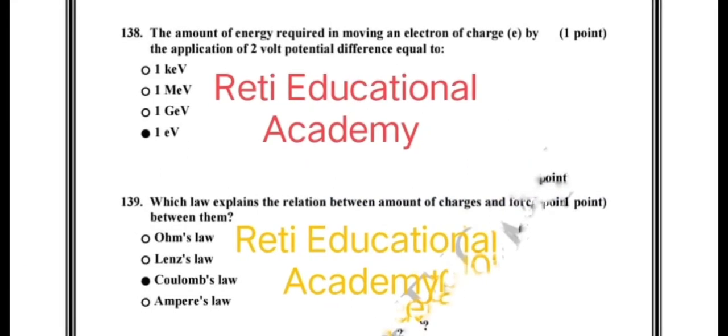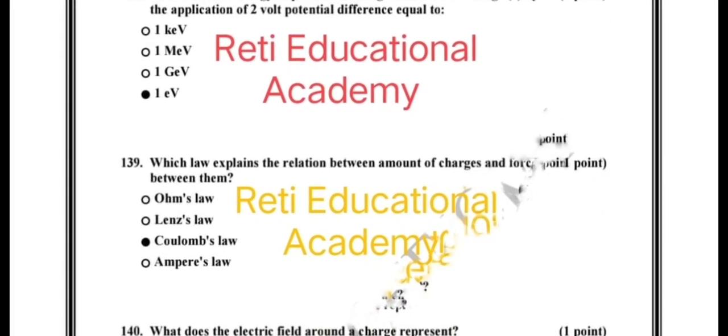Question number 138: The amount of energy required in moving an electron of charge e by the application of two volt potential difference equals to one eV. Question number 139: Which law explains the relation between amount of charges and force between them?